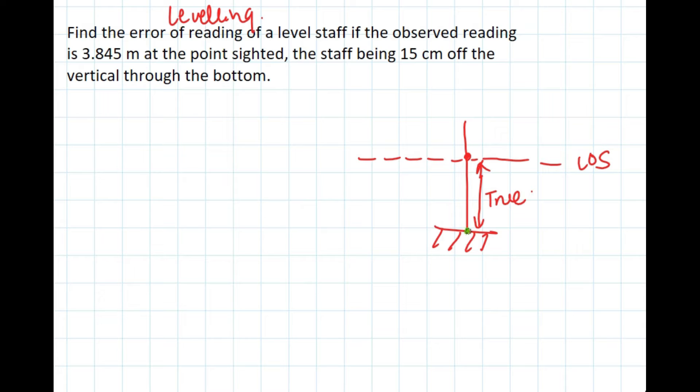It is rotated through this ground point so that it is 15 centimeters off here. And this is the sighted point, this is the observed reading - observed reading is from here to here, 3.845.